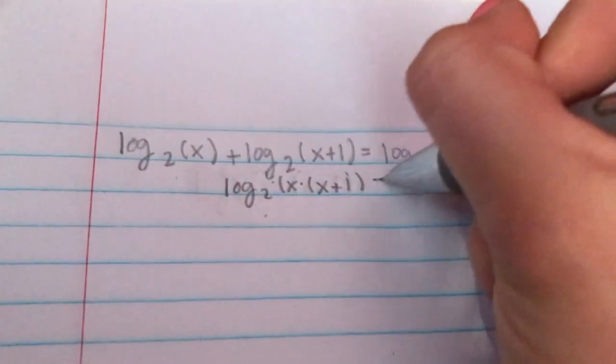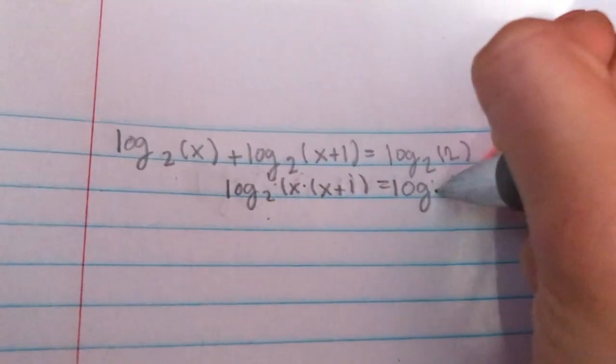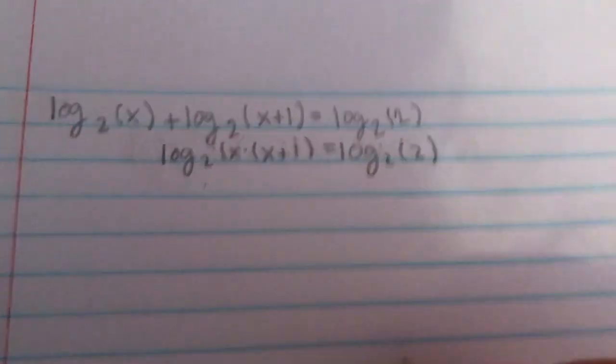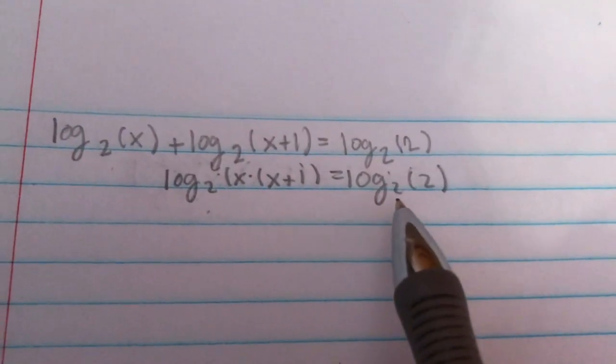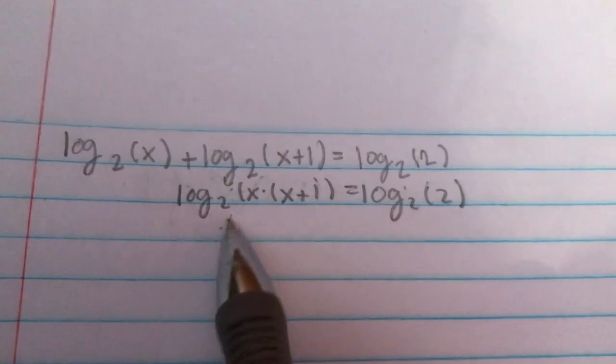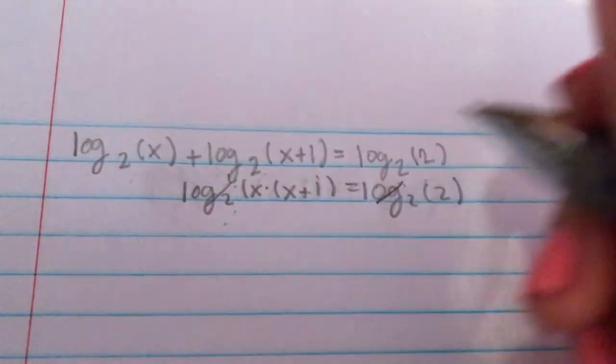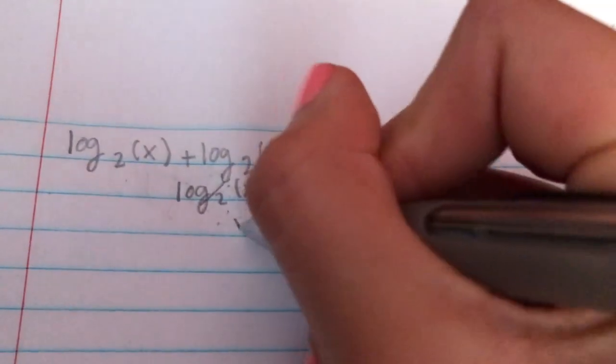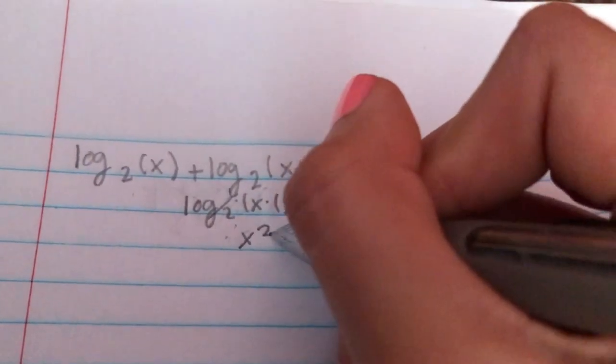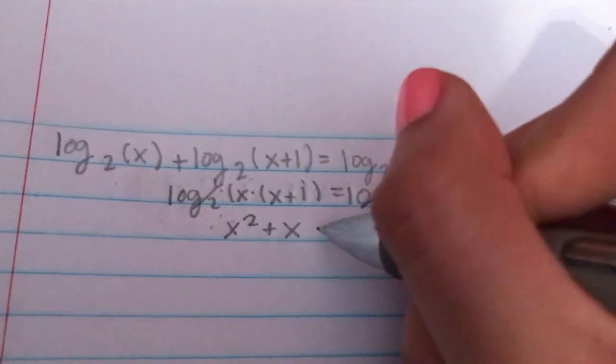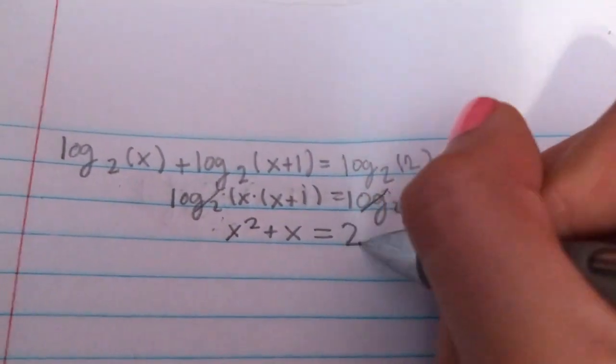So you would have to rewrite it and cancel one out. And then bring down the other side. So since you have the same base again, you would cancel both of them out. And then you would solve on this side to give you x squared plus x equals 2.